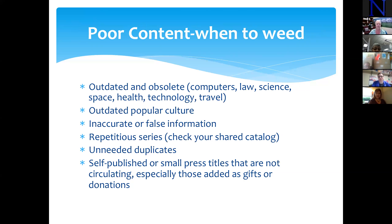Repetitious series: if you're part of a shared consortium and you're a small library, every collection dollar should go well — you don't have to buy every single title in a series. See if someone else has them. You can still market the full series with a bookmark, a space saver. One of the best things I ever saw was an empty clear VHS plastic box given a cover like a book and shelved, saying 'find the rest of the series here — just ask us.' Self-published or small press titles that are not circulating, especially those you may have added as gifts or donations, should be weeded.